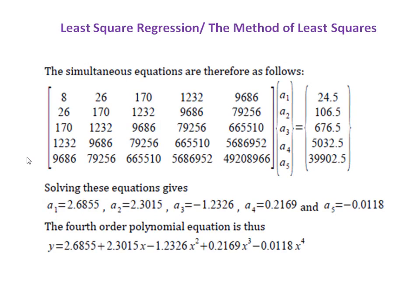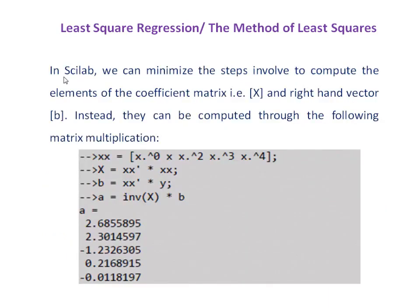With these values the simultaneous equations are written and solved to get: a1 = 2.68, a2 = 2.30, a3 = -1.23, a4 = 0.21, a5 = -0.01. The fourth order polynomial which best fits the given experimental data is: y = 2.68 + 2.30x - 1.23x² + 0.21x³ - 0.01x⁴.